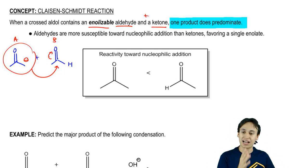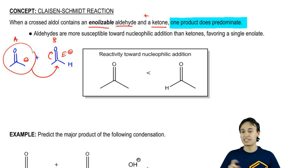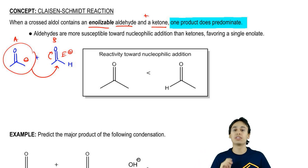Then it would prefer to be attacked and be the electrophile instead of being the enolate. With Claisen-Schmidt, it's the one example where you actually can have enolizable cross products or cross reagents and you're still just going to get one product. Make sense?